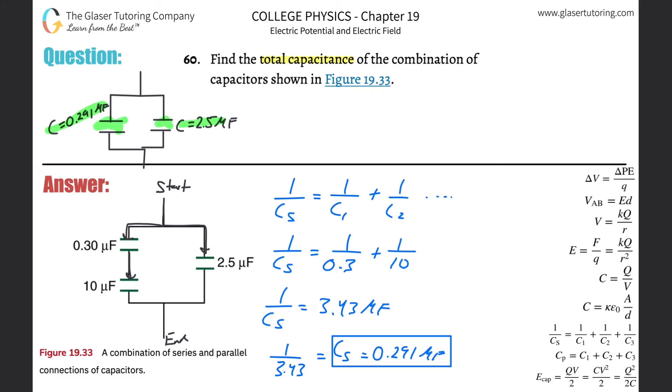Notice these two are in parallel. How do I know that they're in parallel? Well, I think about like water flowing or something like that. In order to get to this capacitor, it did not have to flow through this one. Meaning that if the water came down, it would go both ways and it would flow through each capacitor simultaneously without needing to go through one to get to the other. That's a parallel arrangement.